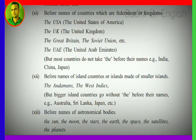Next: before names of island countries or islands made up of smaller islands, we use 'the'. Examples: the Andamans, the West Indies. But bigger island countries do not take 'the' before their names — for example: Australia, Sri Lanka, Japan. Small island groups take 'the'; larger single island countries do not.